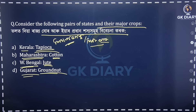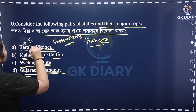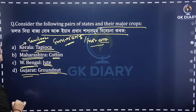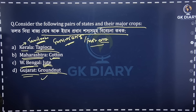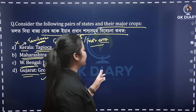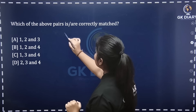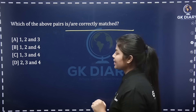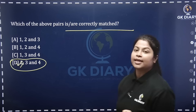So first of all, Kerala is the producer. What is produced by Kerala? Tapioca is produced in Tamil Nadu and Kerala region. Gujarat produces groundnuts, and West Bengal produces jute. Which of the above pairs are correctly matched? The correct option is 2, 3 and 4 — Option D.